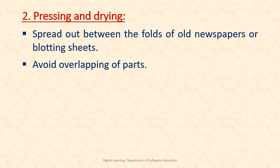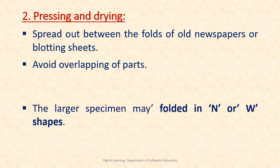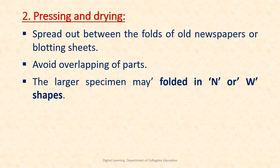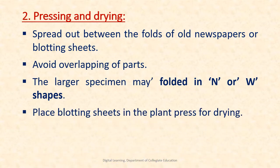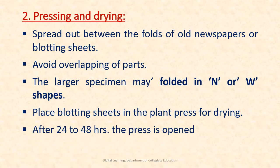The second step is pressing and drying of the specimens. The specimens are spread out between the folds of old newspapers or blotting sheets, avoiding overlapping of parts. Larger specimens may be folded in the form of N or W shapes. The blotting sheets with plant specimens should be placed in the plant press for drying. After 24 to 48 hours, the press is opened and the process is repeated for a week using fresh blotters.